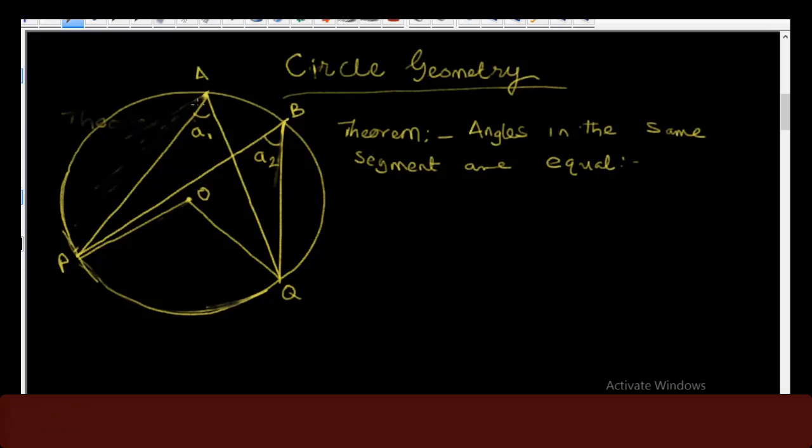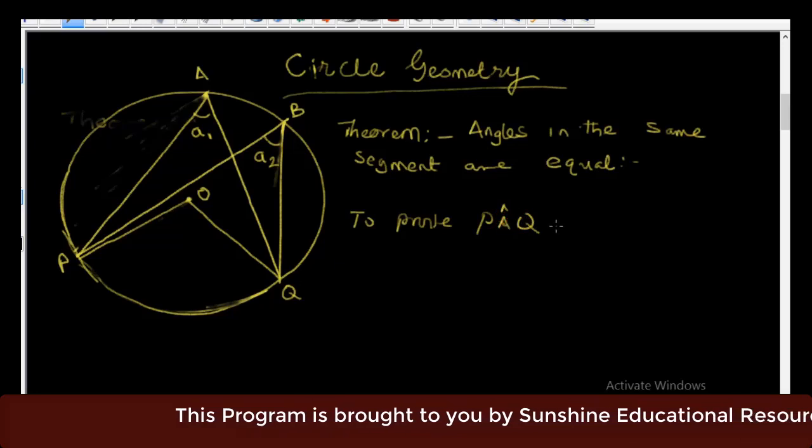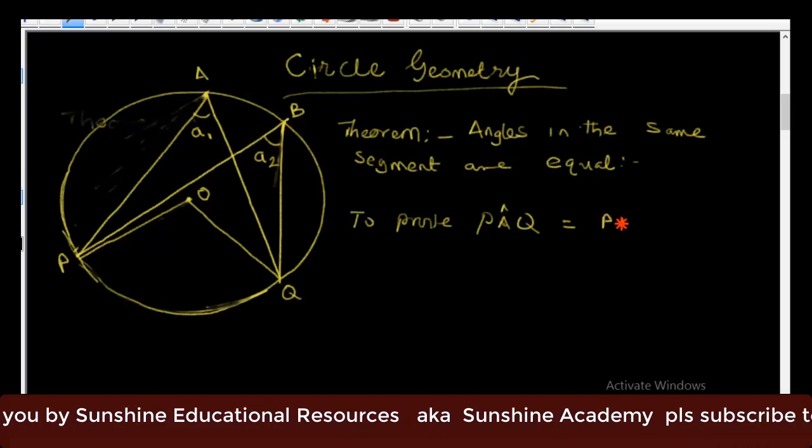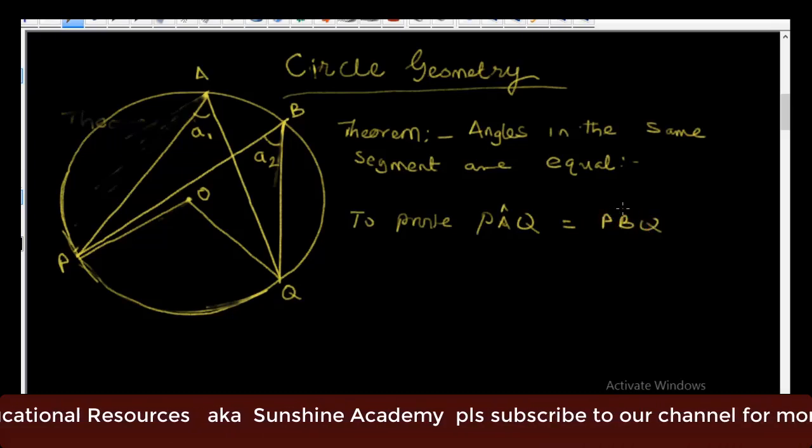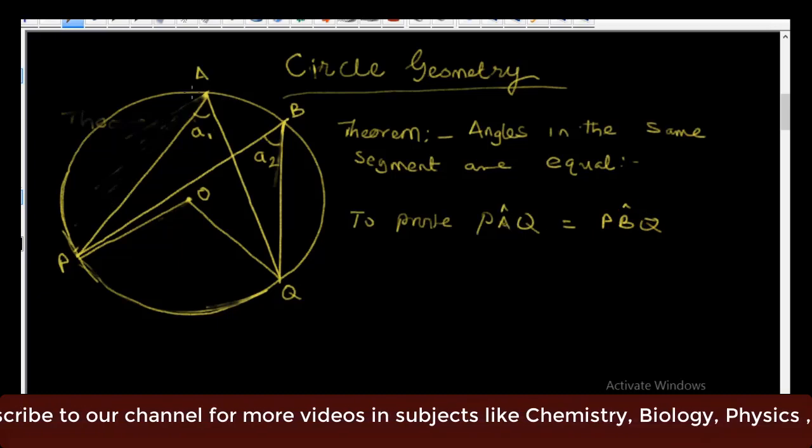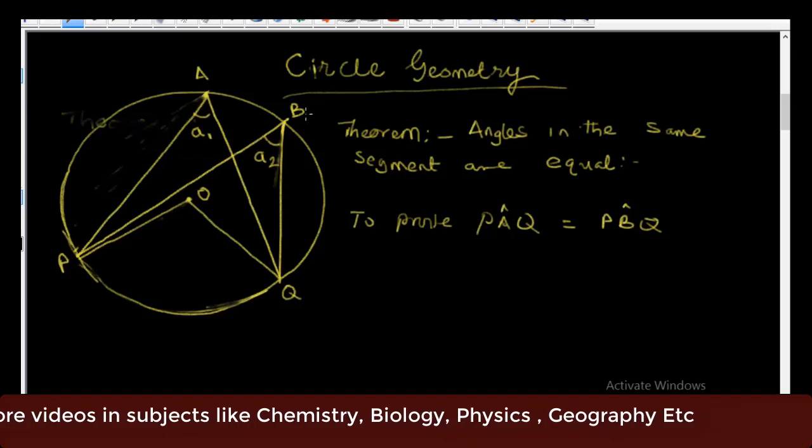So to do that we have point A and point B on an arc. Let me put it down to show you what I'm talking about. Now to prove that angle PAQ is equal to angle PBQ.